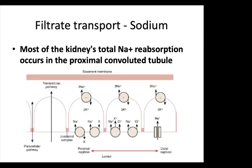Most of the kidney's total sodium reabsorption occurs in the PCT through secondary active and passive mechanisms. In secondary active resorption, the sodium-potassium ATPase pump at the basolateral membrane exchanges three intracellular sodium for two extracellular potassium ions, lowering intracellular sodium. Sodium then enters the tubule cell via coupled transport or a sodium-hydrogen antiporter. In passive resorption, sodium moves paracellularly via chloride transport channels that create an electrochemical gradient driving sodium out of the tubular lumen.